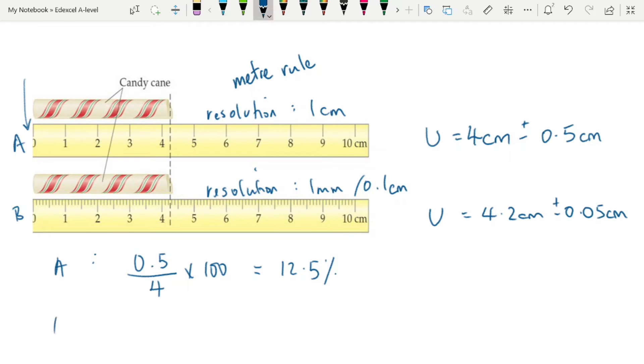What about B? What is the percentage uncertainty in B? Again, we take the measurement uncertainty, put it over the measurement itself, times 100, and in this case we get 1.2%. Much more satisfactory.